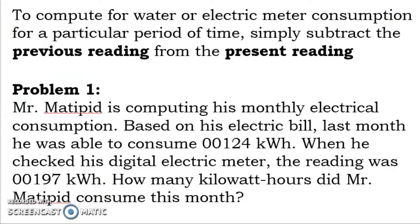To compute for water or electric meter consumption for a particular period of time, simply subtract the previous reading from the present reading. We'll learn more about previous and present readings in the next problem.